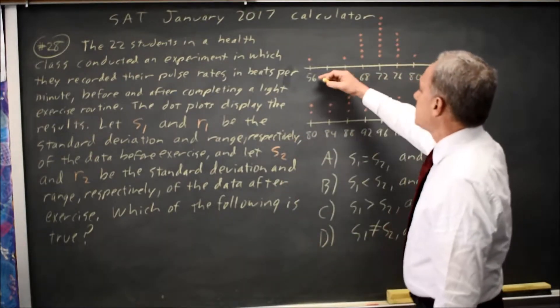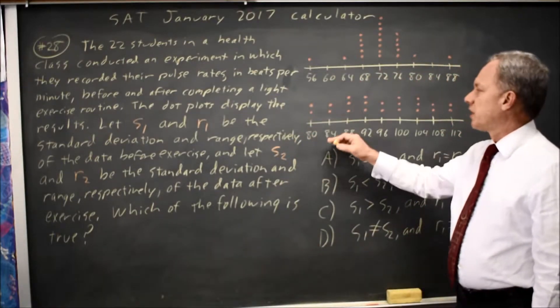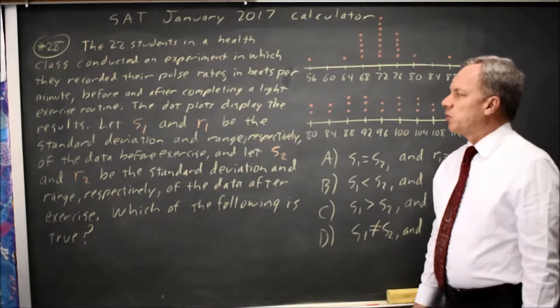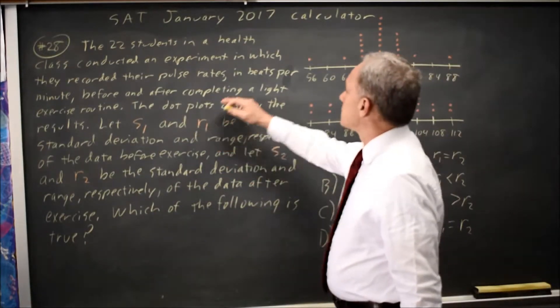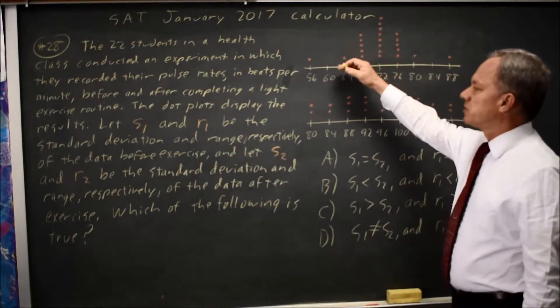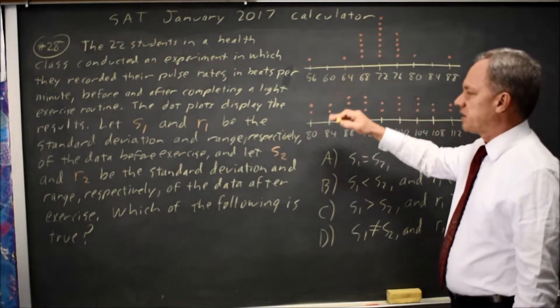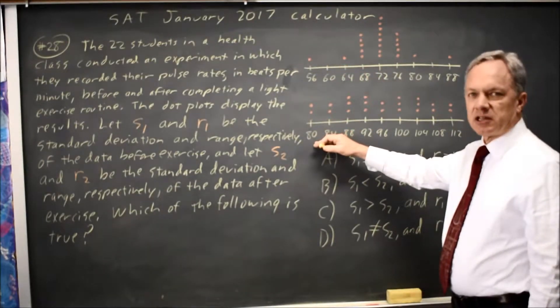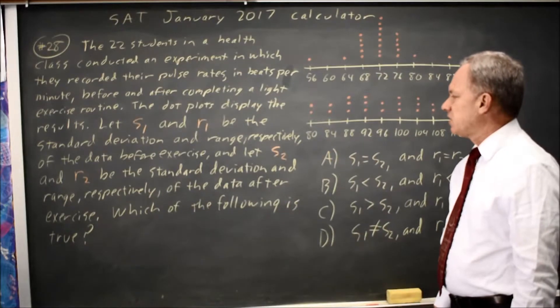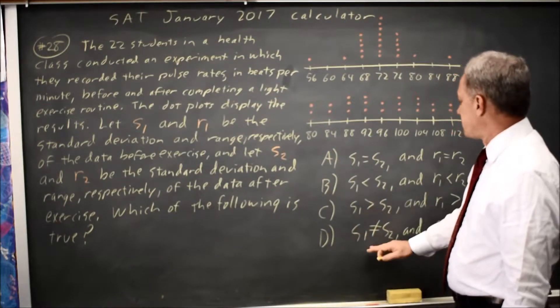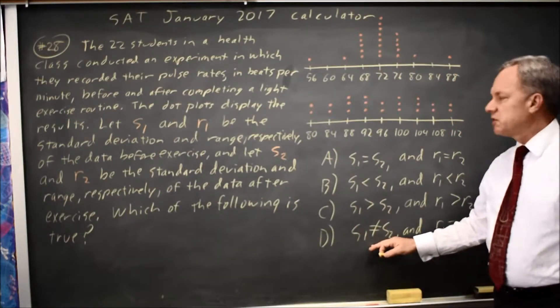They give us data on pulse rates before and after exercise, where S1 is the standard deviation and R1 is the range of the first data set, S2 is the standard deviation and R2 is the range of the second data set, and they ask you to compare the standard deviations and ranges and choose which of these four is correct.